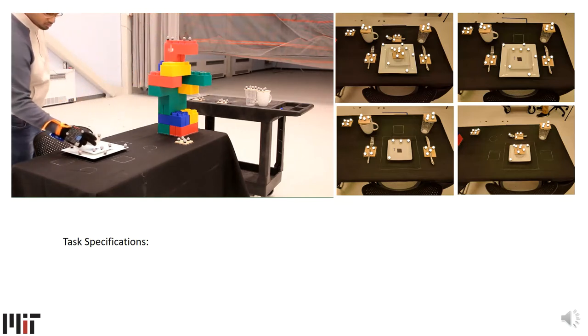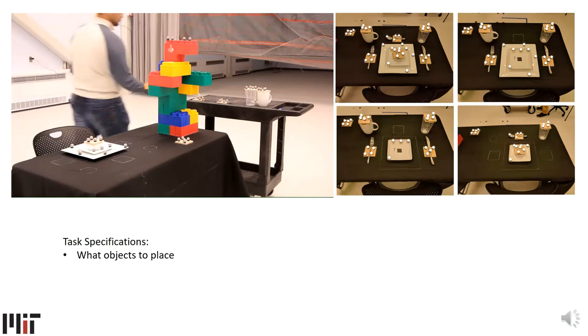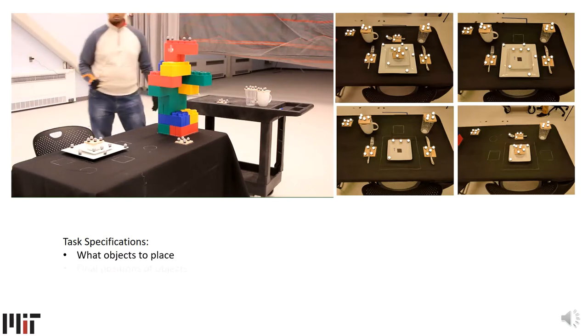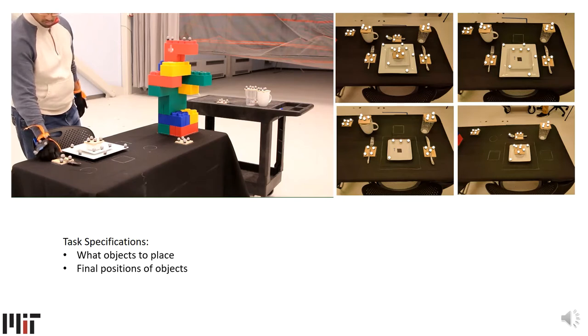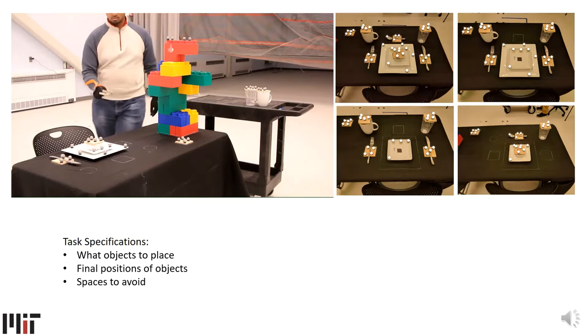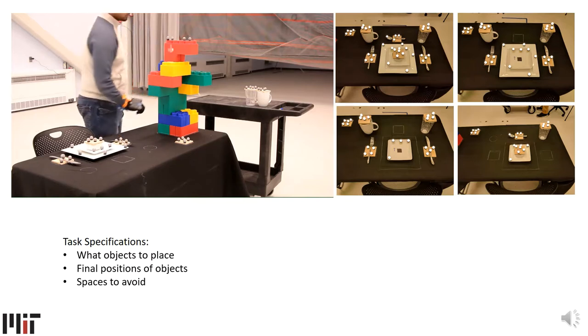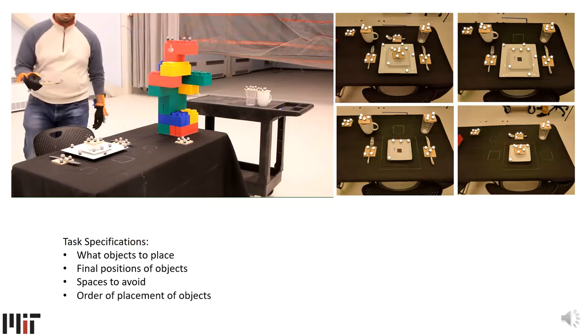The task specifications for setting a dinner table include identifying what objects to place on the table as these differ depending on the dishes being served, the final positions of the objects relative to each other as per culinary traditions, spaces on the table to avoid like delicate centerpieces and previously placed objects, and the order of placement of objects.